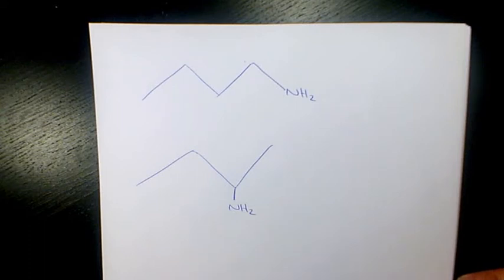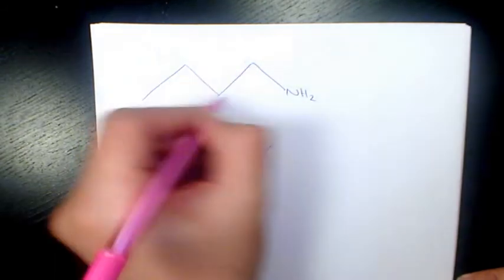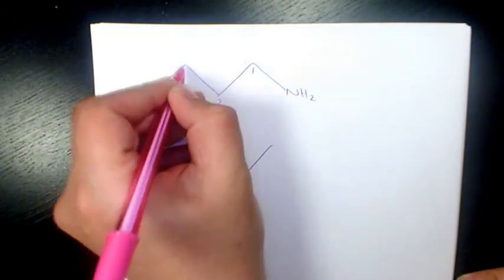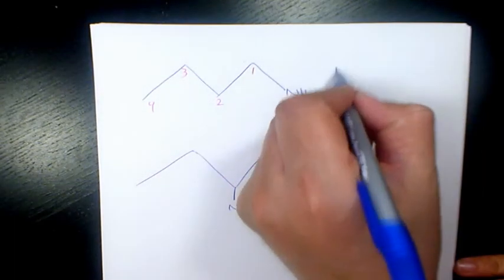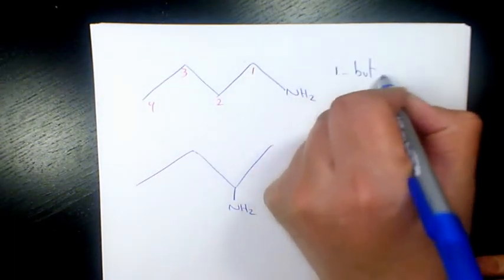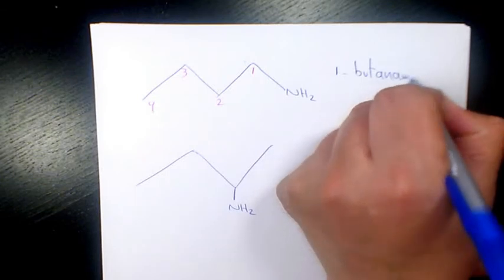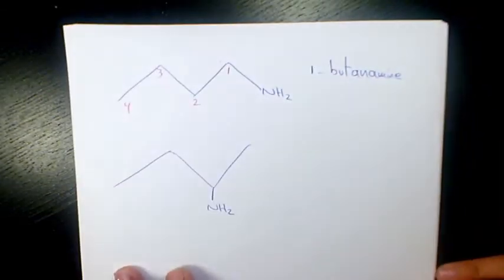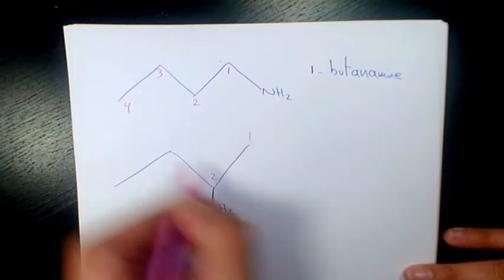So the first one: NH2 is connected to this chain, 1, 2, 3, 4, and since it's connected to the first carbon, it's called 1-butanamine. And the second one is connected to